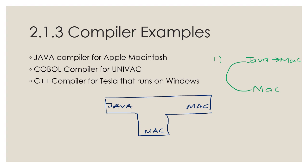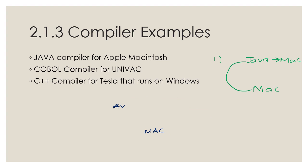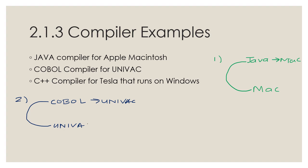As for the second compiler, a COBOL compiler for Univac — in big C notation, the big C represents the compiler that translates COBOL to Univac machine language and is written in Univac machine language. For the third compiler, the big C compiler translates C++ to Tesla machine language but this compiler runs on Windows. So this is how you represent compilers using big C notation.